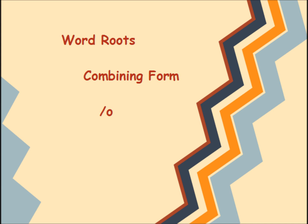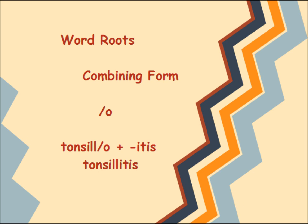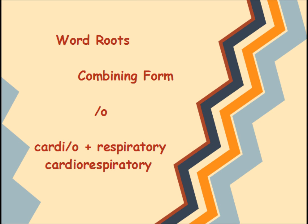Word roots are often written with slash-O at the end — this is called the combining form. If the suffix or word root following begins with a vowel, drop the O. An example is tonsillitis: the word root is tonsillo and the suffix is itis, so drop the O to get tonsillitis. If the suffix or word root following begins with a consonant, keep the O. An example is cardiorespiratory — the word root following cardio is respiro, and we kept the O.